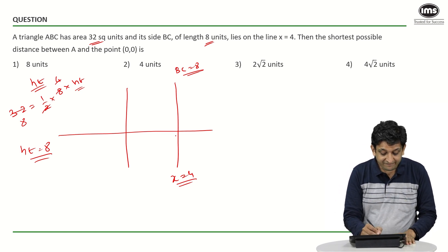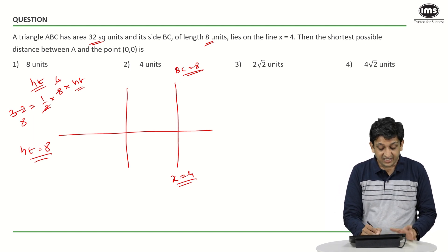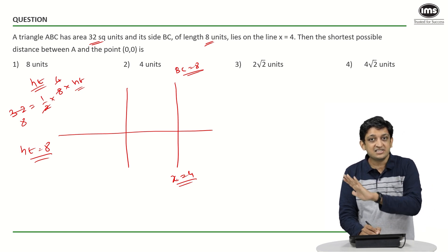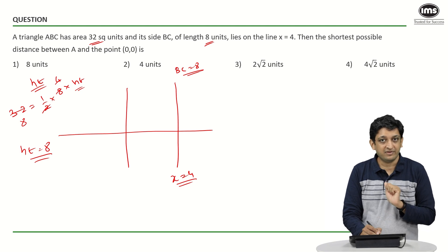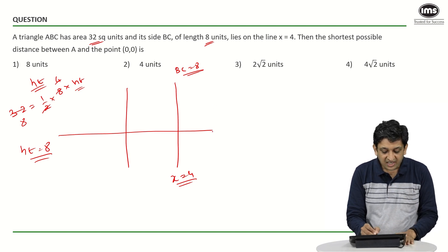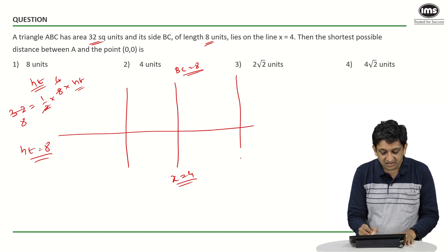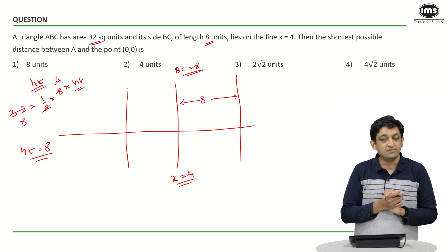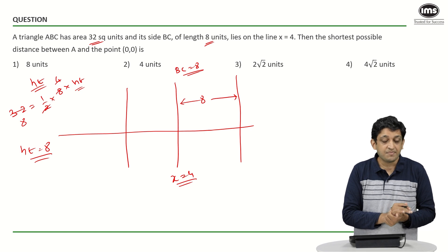If you have the line BC here, we will have the vertex A at a distance of 8 units from this line BC that we have drawn. Either A will lie on a line which is 8 units away from BC, or it will be 8 units to the left of the line that we have drawn.